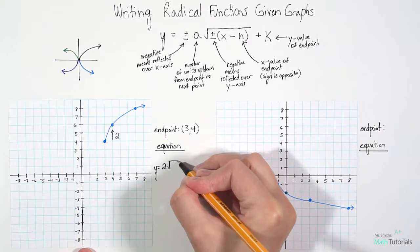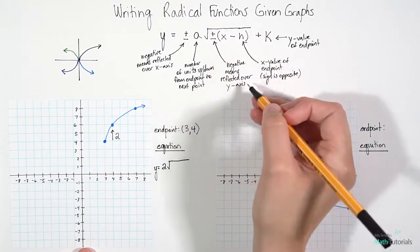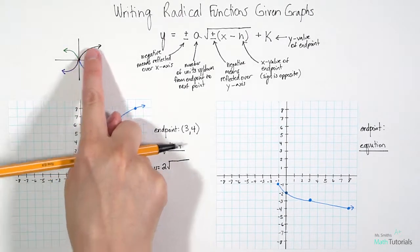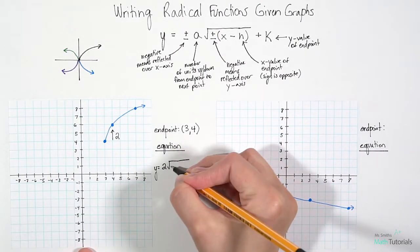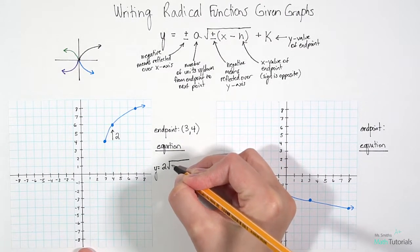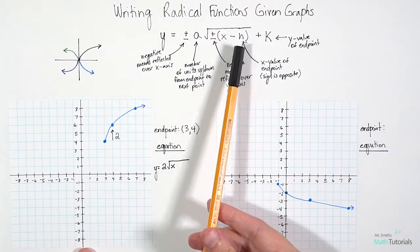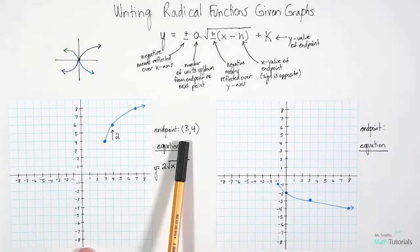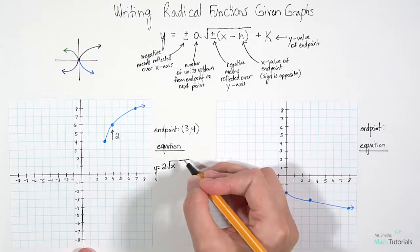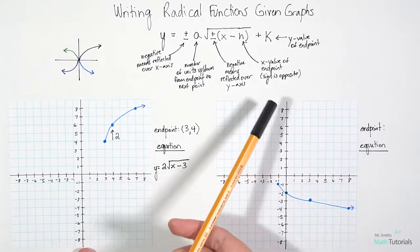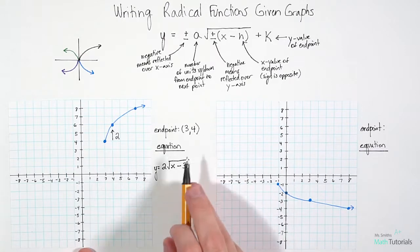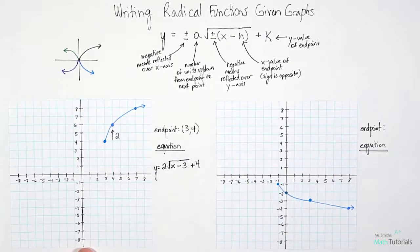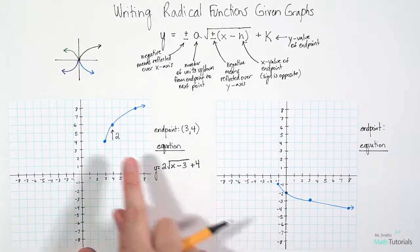Now I'd go ahead and put in my square root. Is this reflected over the y-axis? No — we said at the beginning this was just a standard direction, so I don't need to put a negative there. I can write my x. My h is the opposite of the x-value of the endpoint, which is 3, so it becomes negative 3. And then my k on the outside is just my y-value of the endpoint, positive 4. So the equation for that picture is y = 2√(x − 3) + 4.